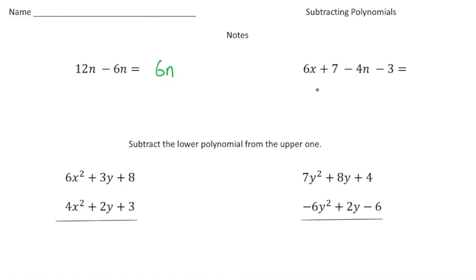Now for this one, we have 6x plus 7 minus 4n minus 3. The only terms that we can combine or subtract are 7 and negative 3, so 7 minus 3 gives us 4. The 6x and the negative 4n are not like terms, so we leave them as is. So it's 6x minus 4n plus 4.